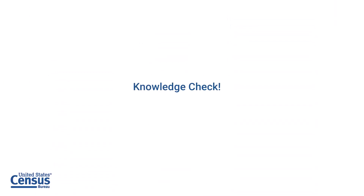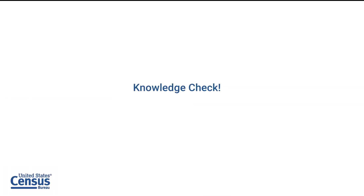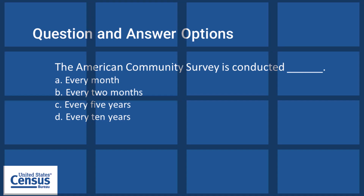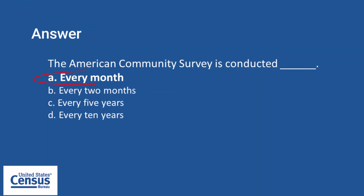Time for another knowledge check. When is the ACS conducted? Is it every month, every two months, every five years, or every 10 years? If you said every month, you are correct. The ACS is conducted every month and the data are released every year.